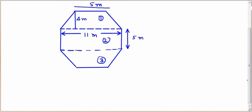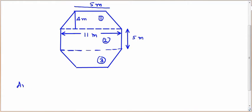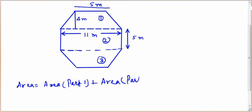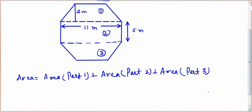To find the surface area of this octagon, we will find the area of all three parts and add them. Area equals area of part 1 plus area of part 2 plus area of part 3. The first and third figures are in the shape of a trapezium, and the second one is a rectangle. We know the formula to find the area of all these.